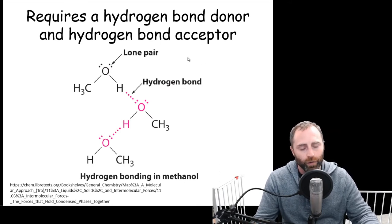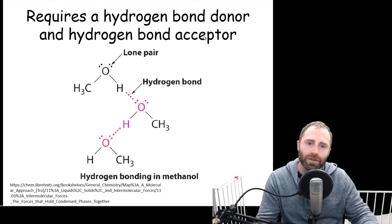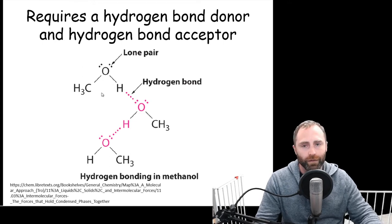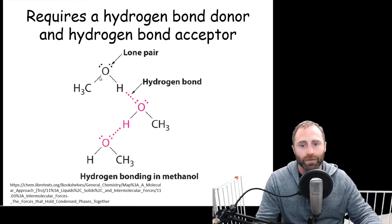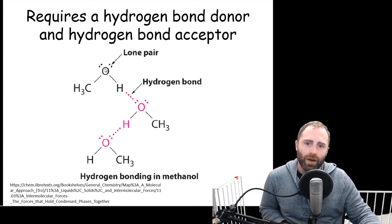Hydrogen bonding requires hydrogen bound to nitrogen, oxygen, fluorine, or sometimes sulfur. Another way to state this is that we need a hydrogen bond donor and a hydrogen bond acceptor. Looking at methanol (CH₃OH): in its Lewis structure, three hydrogens surround a carbon, which links to an oxygen, which links to one more hydrogen, with two lone pairs on the oxygen. Using VSEPR, the electron geometry around oxygen is tetrahedral and the molecular shape is bent.